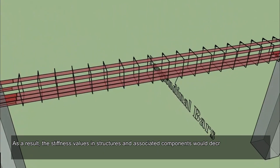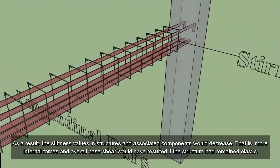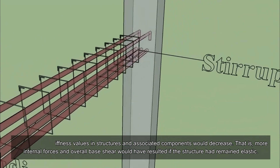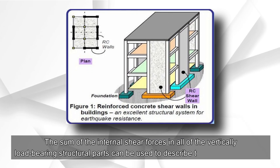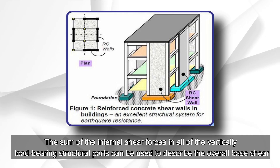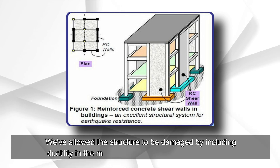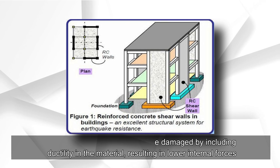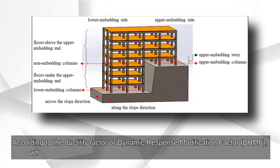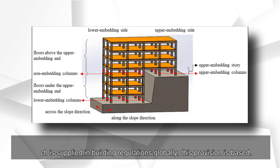As a result, the stiffness values of structures and associated components would decrease. More internal forces and overall base shear would have resulted if the structure had remained elastic. The overall base shear can be described as the sum of the internal shear forces in all vertically load-bearing structural parts. By including ductility in the material, we allow the structure to be damaged, resulting in lower internal forces.